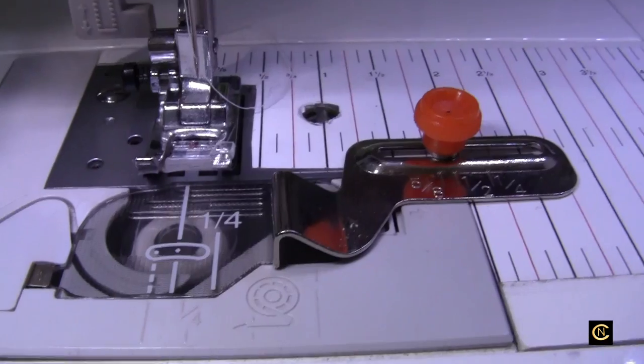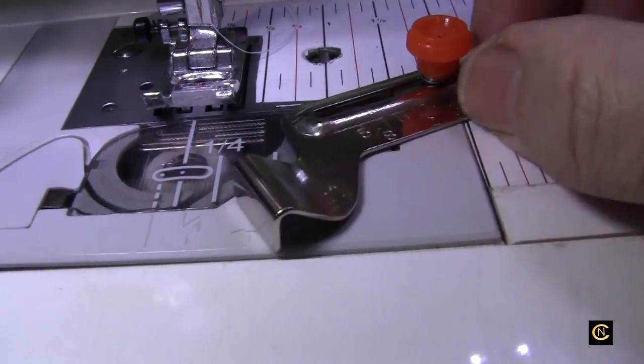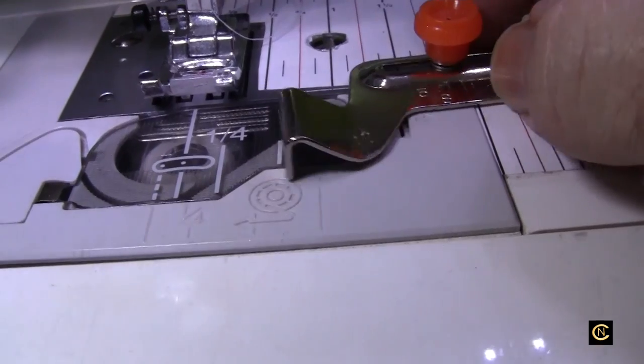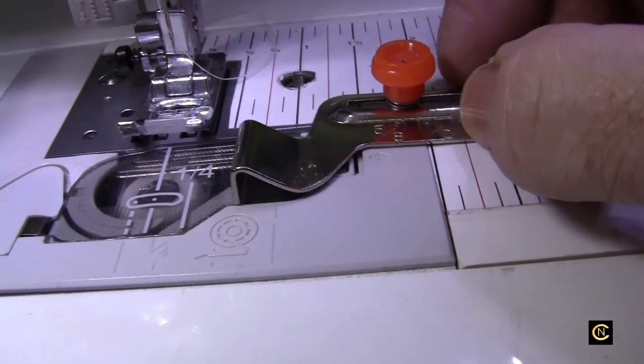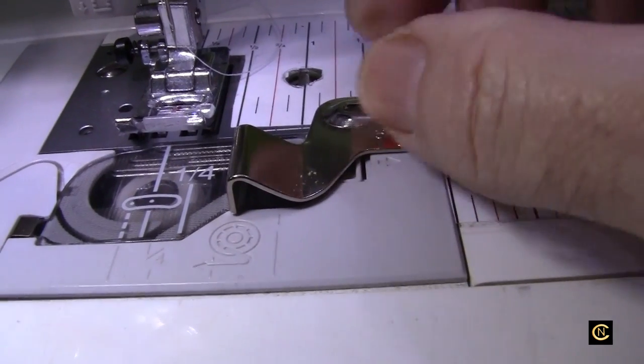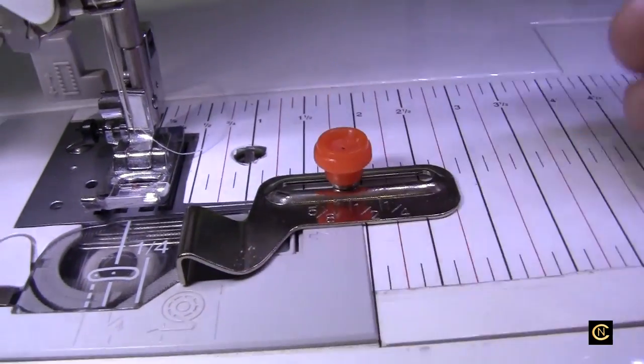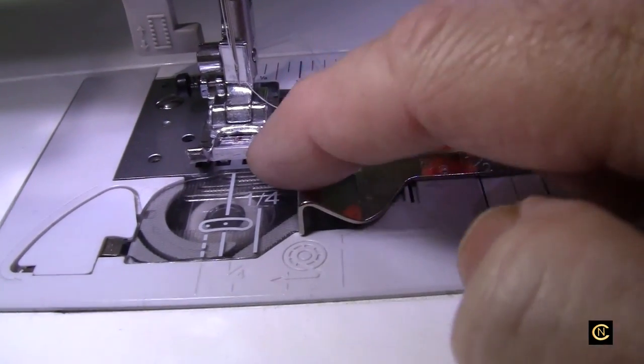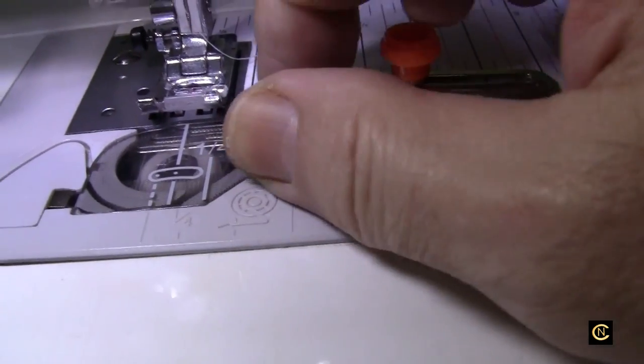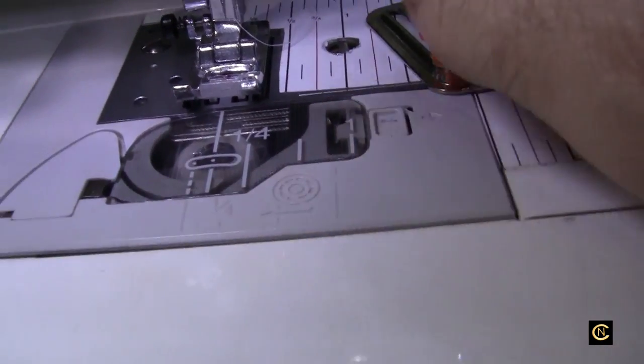Brother and Baby Lock, this is their dedicated seam guide. So if you need to sew straight and you want to have your seam allowance, the only thing is with this type of thing, every time you change seam allowance from three eighths to a five eighths, you've got to unscrew it and move it back and forth. Now also, some people like to use a magnet.